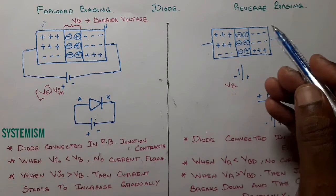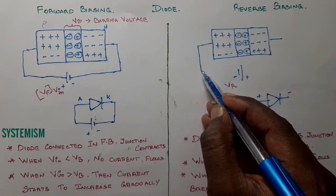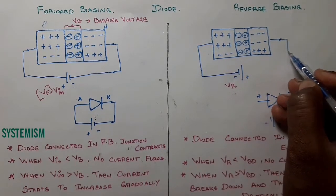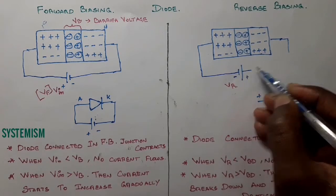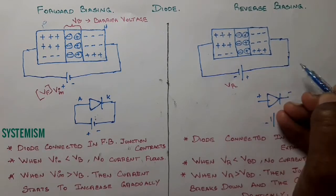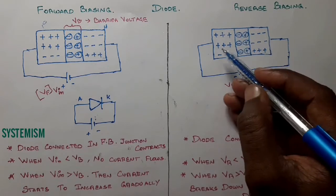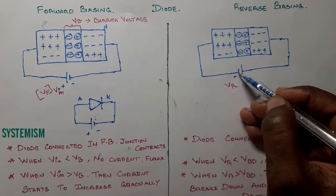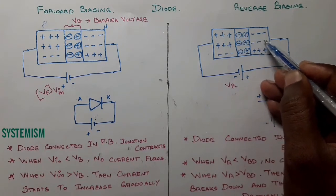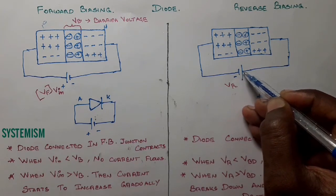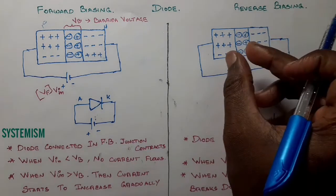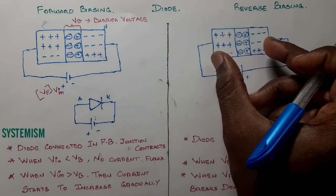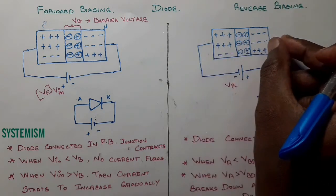In reverse bias, we connect the P-type layer to the negative terminal of the battery and the N-type layer to the positive terminal. As a result, the positive-charged holes are attracted towards the negative terminal, and the electrons are attracted towards the positive terminal.